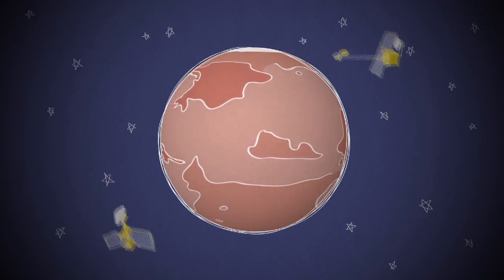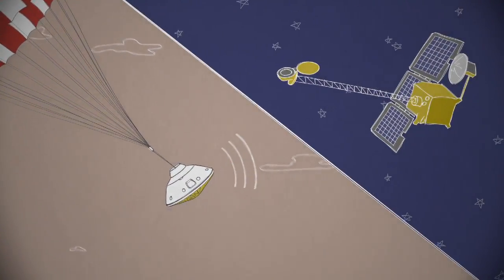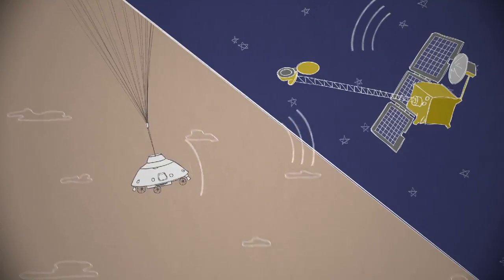But NASA has two spacecraft orbiting Mars that can help. For the second half of Curiosity's descent, the Mars Odyssey orbiter is in a good place to pick up the rover's signal and send it right back to Earth.